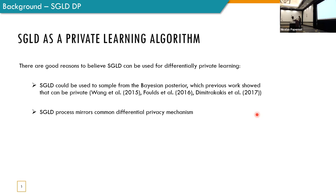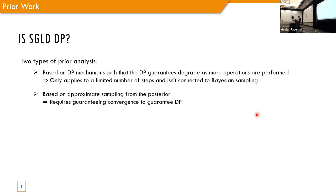So, there are good reasons to believe that SGLD could be used for differential private learning. One of them is that SGLD could be used to sample from the posterior distribution. And previous work showed that sampling from the posterior can be private in some cases. And a second reason to believe that it can be private is that the process itself of adding noise to the gradient step mirror a common differential privacy mechanism, as Guttem showed.